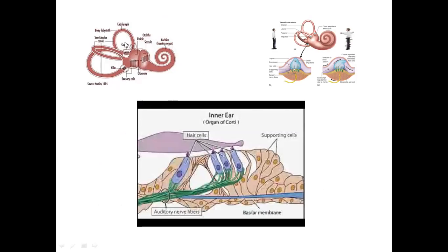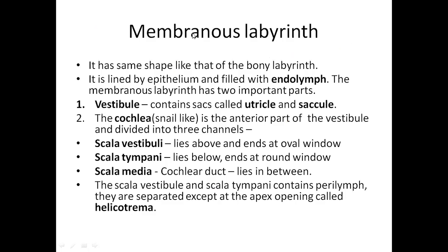This is the structure of the internal ear — you can see the semicircular canals, the vestibular part, and the cochlea. The vestibular part helps in balancing the individual, so we will not discuss that here. We are very much interested in the organ of Corti, which is helpful in bringing about sound perception. The membranous labyrinth enclosed inside the bony labyrinth has two parts: the vestibular portion and the cochlear portion.